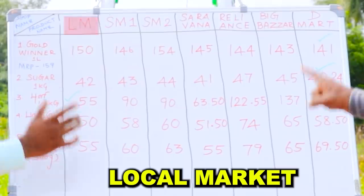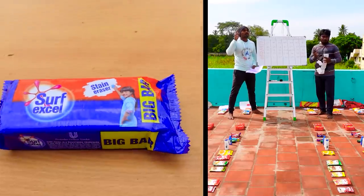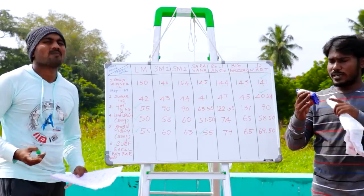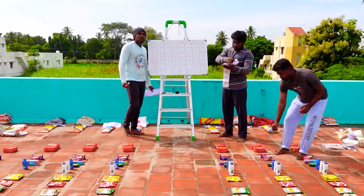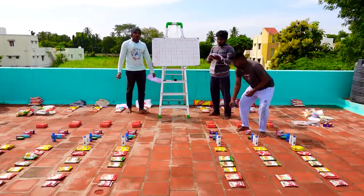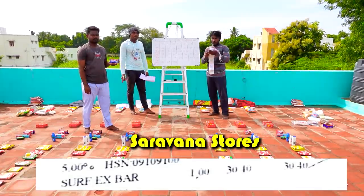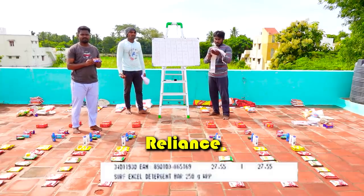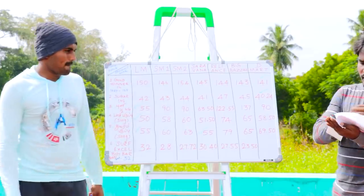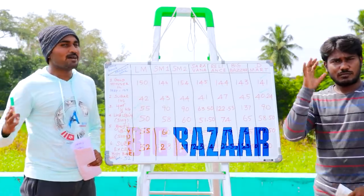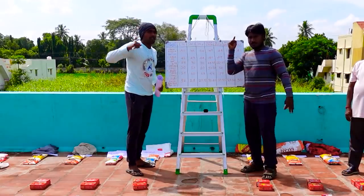Here we have two names — local market and Saravana. Surf Excel Big Bazaar is 50,000. That's why Surf Excel is 50,000. This bar is 52,000. Local market is 52,000. Supermarket one is 28,000. Supermarket two is 27,000. Saravana Stores is 40,000. Reliance market is 25,000. Big Bazaar is 25,000. The last one is 50,000. The winner is 50,000. Big Bazaar is more than 6,000. The overall total is less than 6,000.